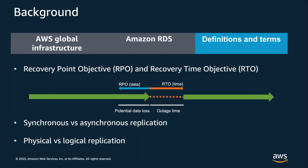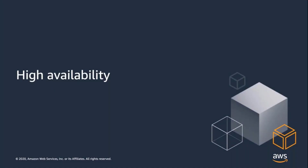Now that we have a firm foundation on AWS, RDS, and recovery terminology, we're ready to talk about how Amazon RDS takes care of replicating your data within and across AWS regions, and how that affects the RPO and RTO of a few different scenarios. High availability refers to system designs that maintain the availability of a resource in the face of underlying failures. In this section we'll talk about how RDS keeps customer workloads up and running.